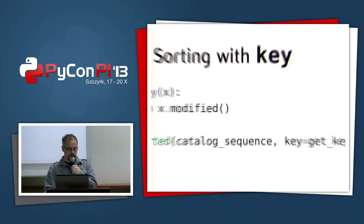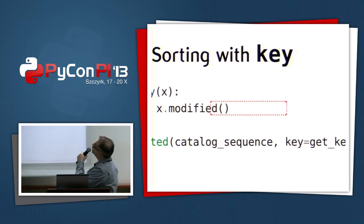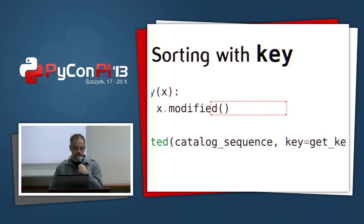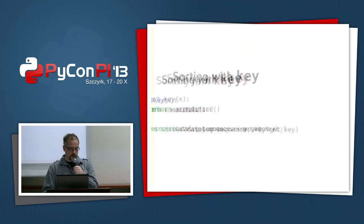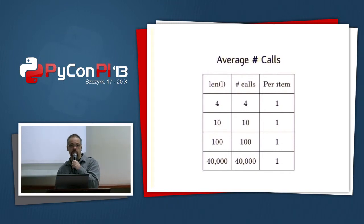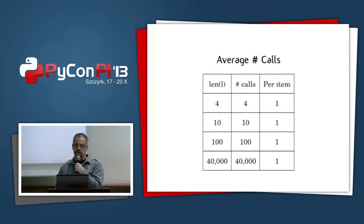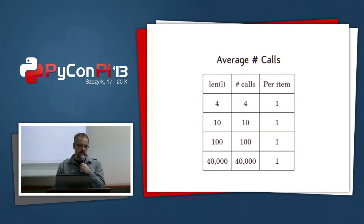Since Python 2.4 you can sort with a key function instead. The key function should only return something sortable — in this case the modified date. With a key function you get an average of exactly one call per item: 40,000 instead of 350,000 calls — one-seventeenth the amount. The calls are also faster individually because you only get the modified date once instead of twice. This sorting will be at least 10 times faster.